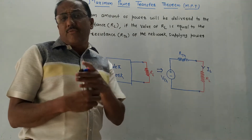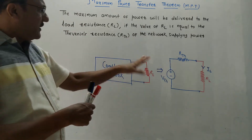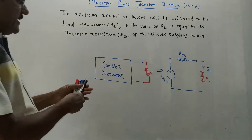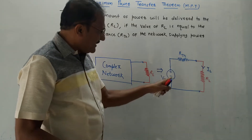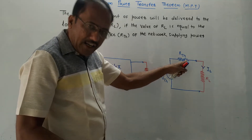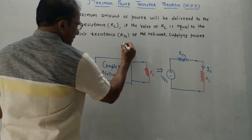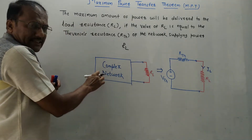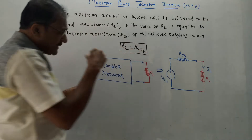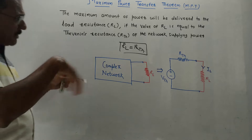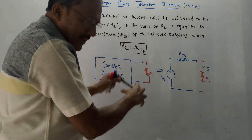Dear students, if you haven't yet watched the video of Thevenin's theorem, do watch it. I will provide the link in the description box. The statement is very clear: if we convert this complex network into its equivalent network, we get VTH in series with RTH. If the condition RL equals RTH is satisfied, maximum power transfer takes place from the given network to the load.